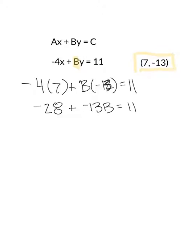So now that I've simplified my equation, I have a two-step equation to solve. You always add and subtract before you divide. So I'm going to add the opposite of negative 28 to both sides. And that means I have negative 13B over here and I have 39 over here.